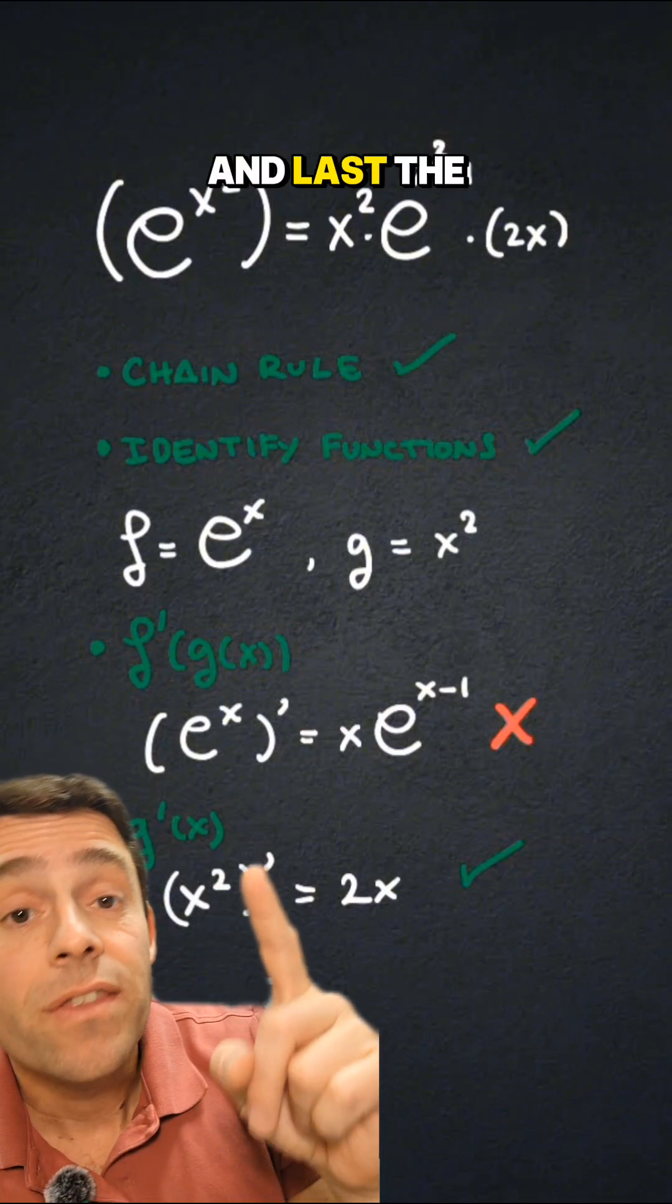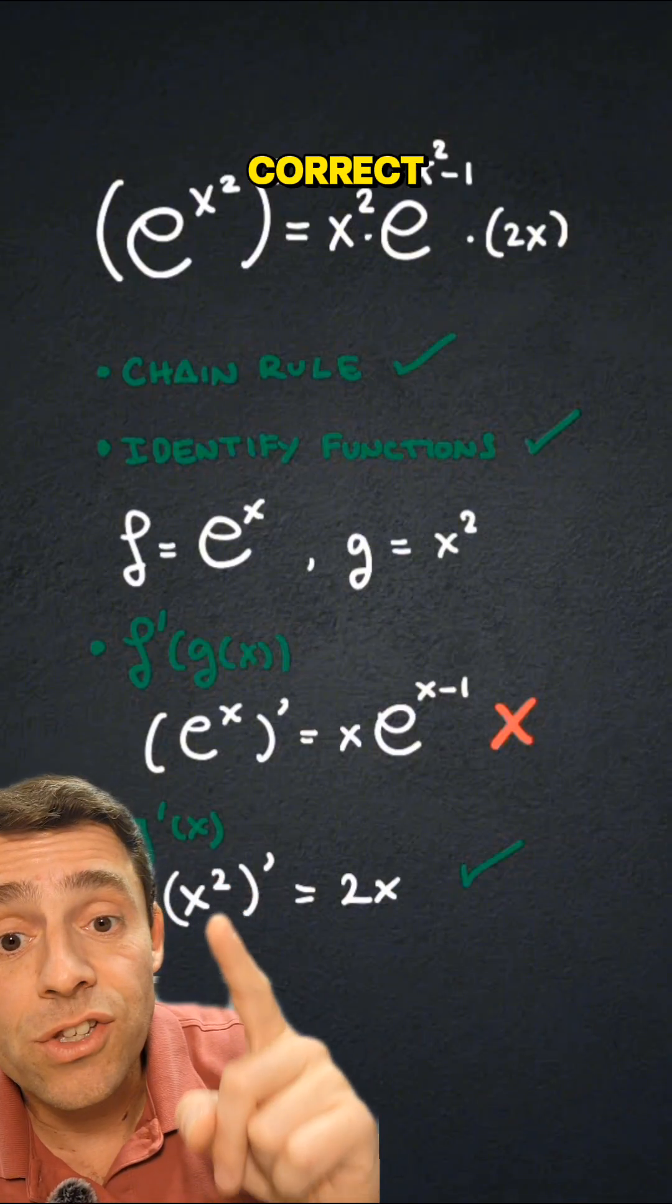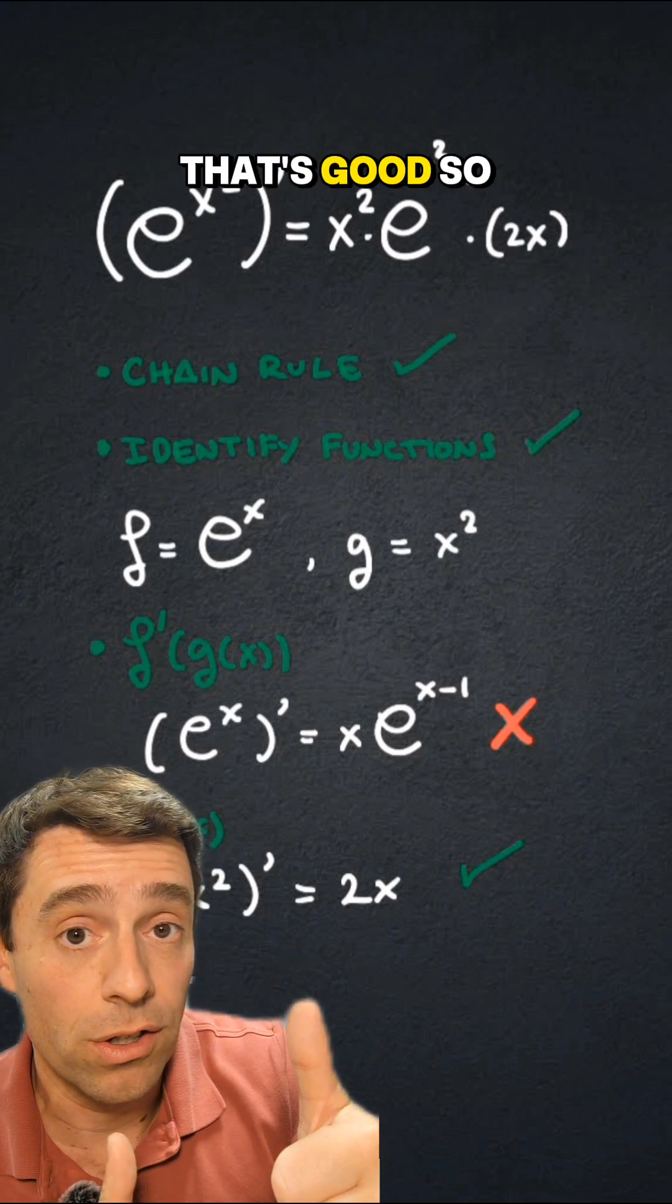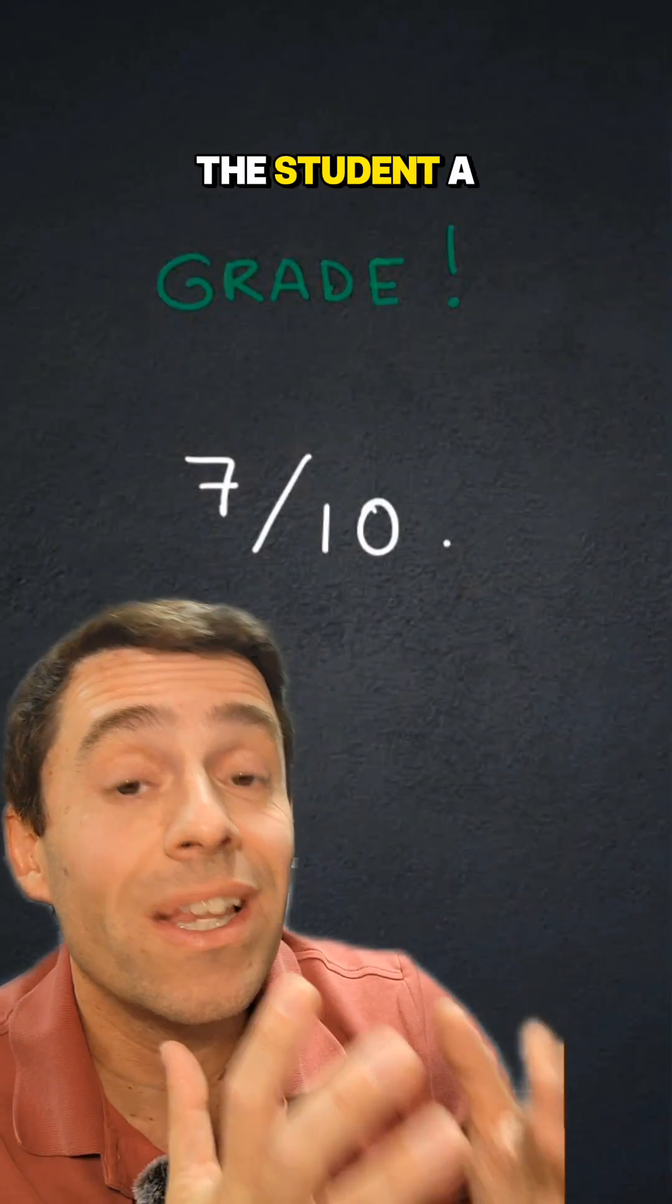And last, the derivative of g of x is correct: g of x squared derivative is 2x. That's good. So overall I'm going to give the student a 7 out of 10.